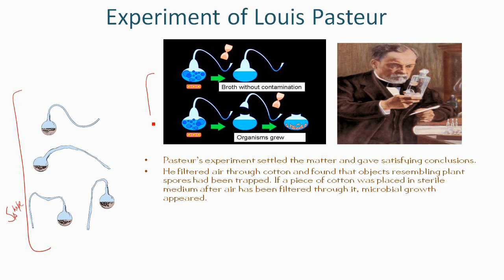After the broth had been sterilized, Pasteur broke off the swan's neck from the flask in the second experiment, exposing the nutrient broth within to air from above. The flasks in the first experiment were left as they were. Over time, dust particles from the air fell into the broken flasks of the second experiment. In the first experiment, dust particles remained near the tip of the swan's necks but could not travel into the flasks, keeping the nutrient broths sterile.